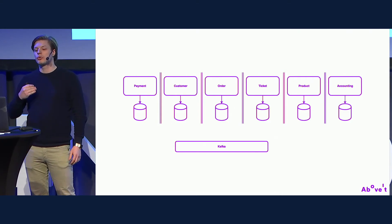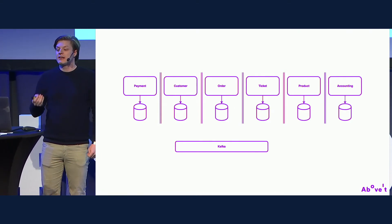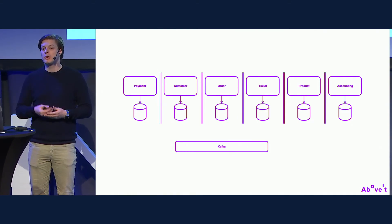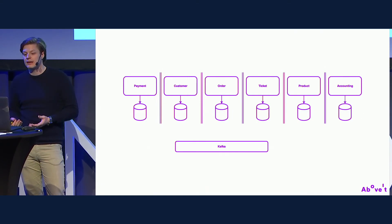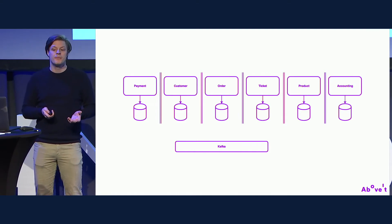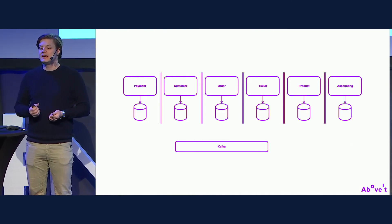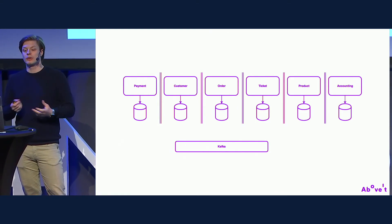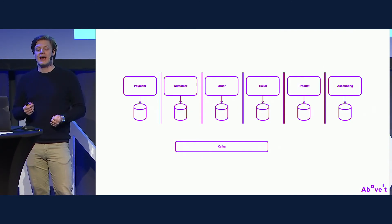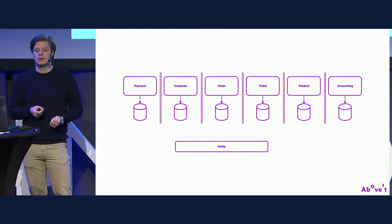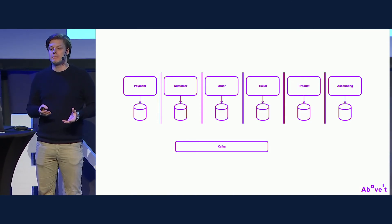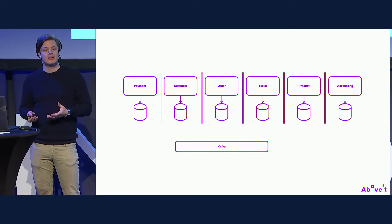This architecture provides extra benefits. If the accounting department wants to start tracking every sale, they create their own application and because we're using a streaming platform, none of the existing modules need code changes — they are already publishing their facts to the stream. The accounting application just starts listening for the right events. A Kafka-specific benefit is that Kafka can keep all events published since the beginning of time, so the accounting app can read all historical sales. Even if they lose their database, they can replay all events from the stream to recreate it.